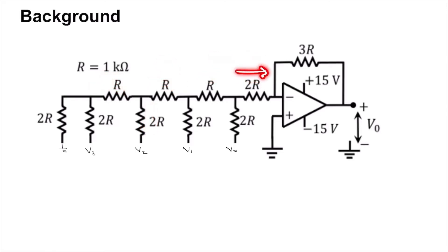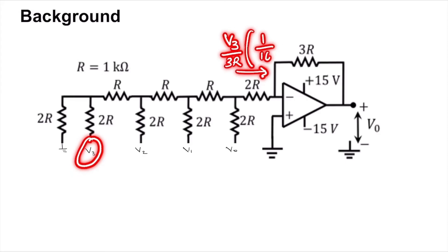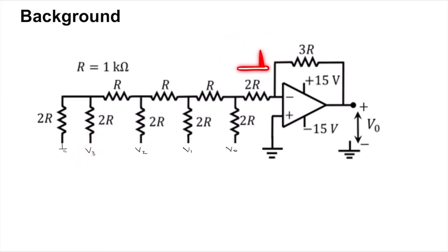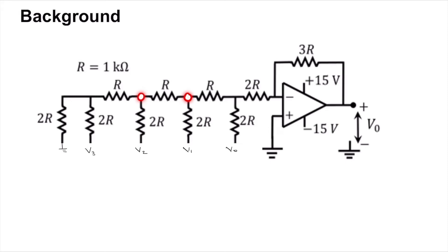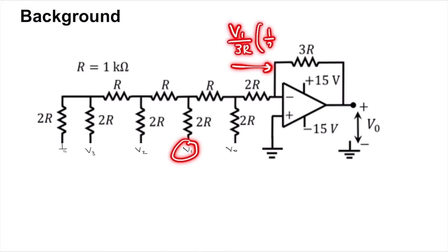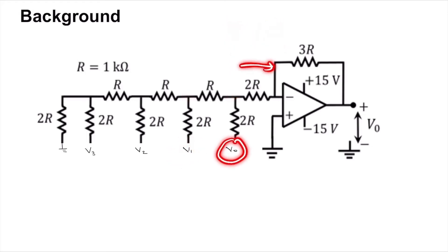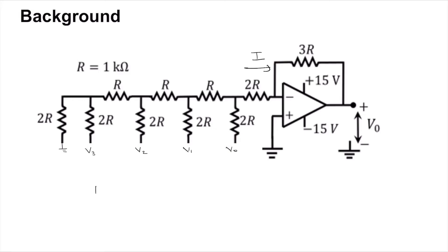The component of current through the output 2R due to v3 is v3 / 3R × 1/16, because v3 goes through four halvings. For v2 it is v2 / 3R × 1/8 (three halvings). For v1 it is v1 / 3R × 1/4 (two halvings). For v0 it is v0 / 3R × 1/2 (one halving).